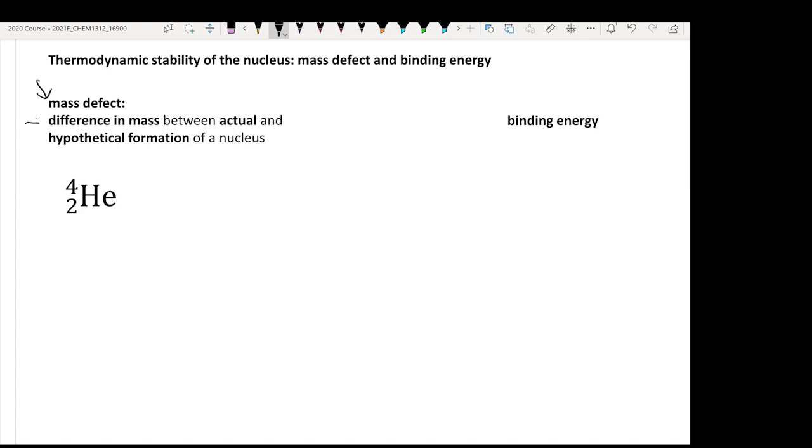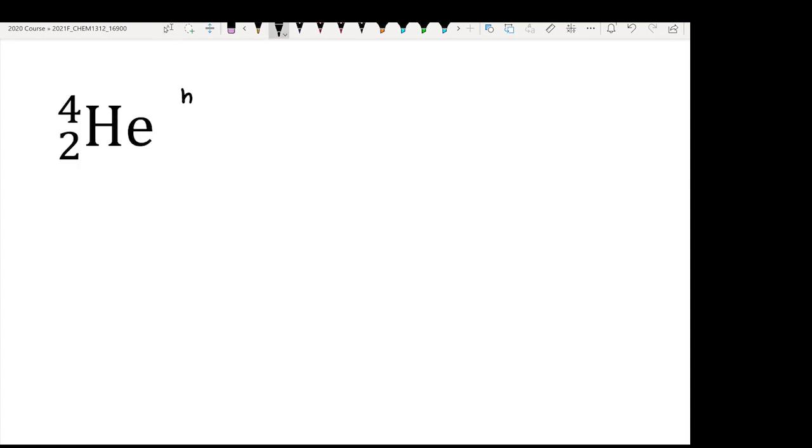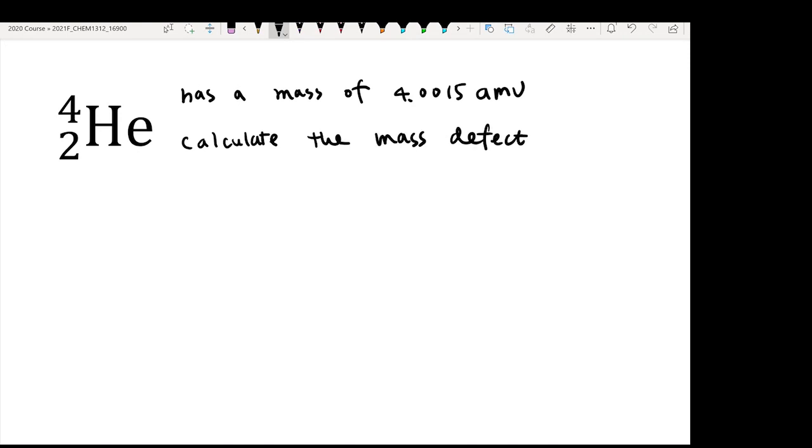Mass defect is defined as the difference between actual and hypothetical weight of your atom. For example, helium-4 has an actual mass of 4.0015 amu. And then you calculate the mass defect. This is one of the types of questions you are going to see a lot in this chapter. The questions provide you an actual mass of this specific atom.